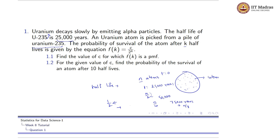After two half-lives it would be (1/2)^2, and after three half-lives it would be (1/2)^3. After three half-lives, only 1/8 of the atoms remain. So for this atom to be surviving, the probability would be 1/8, because already 7/8 of the atoms after three half-lives will be decaying. So the probability after three half-lives equals (1/2)^3.